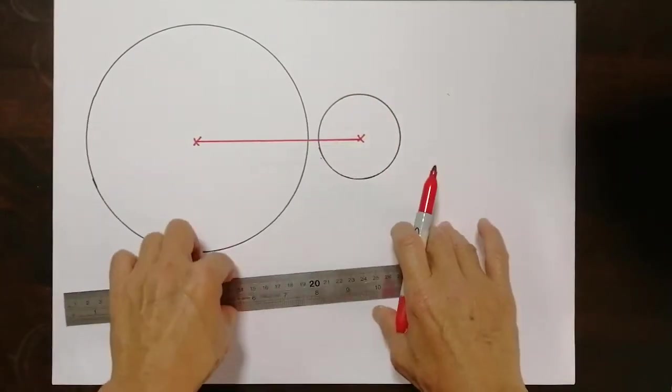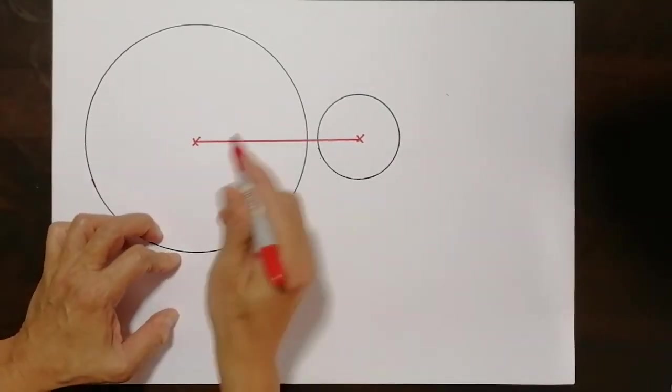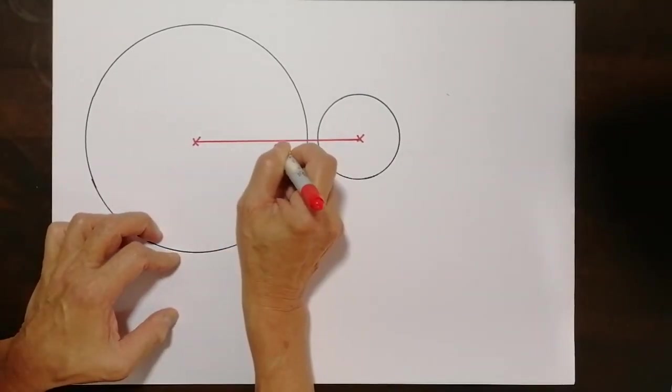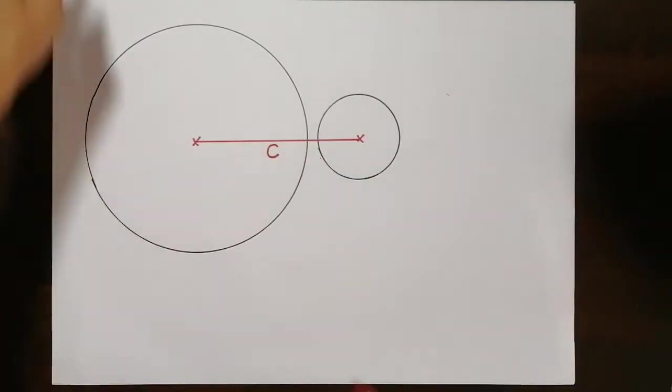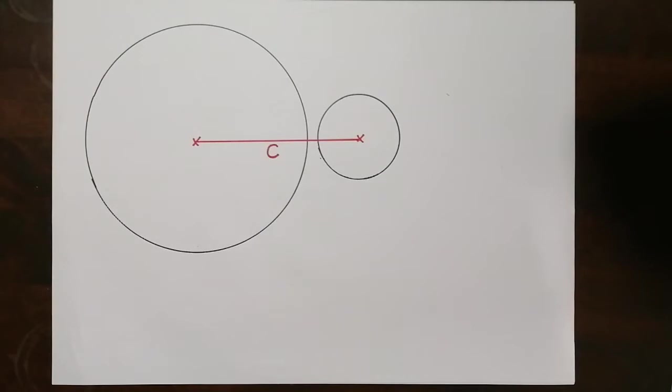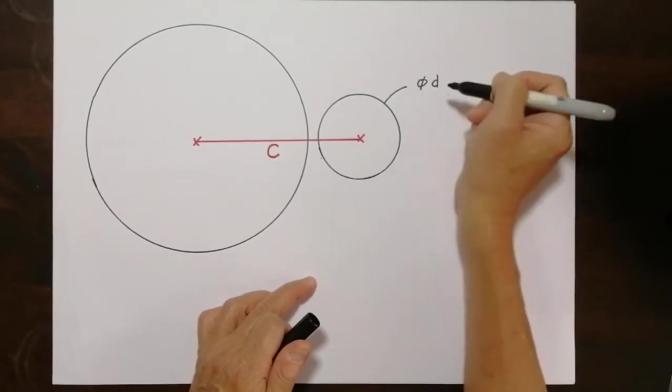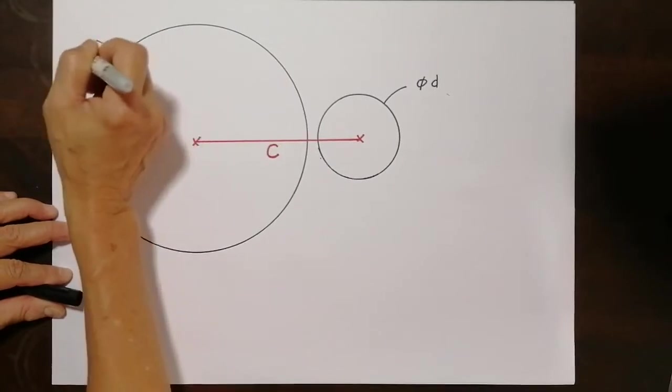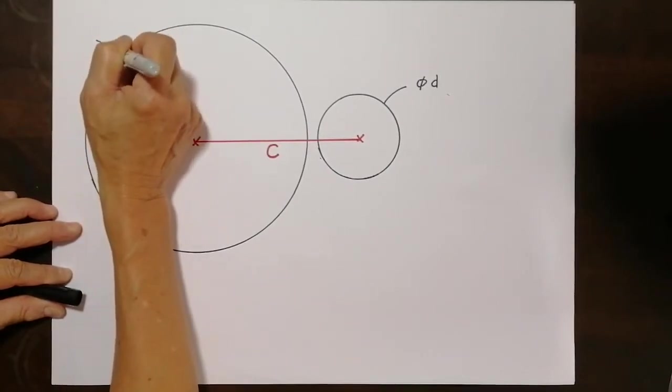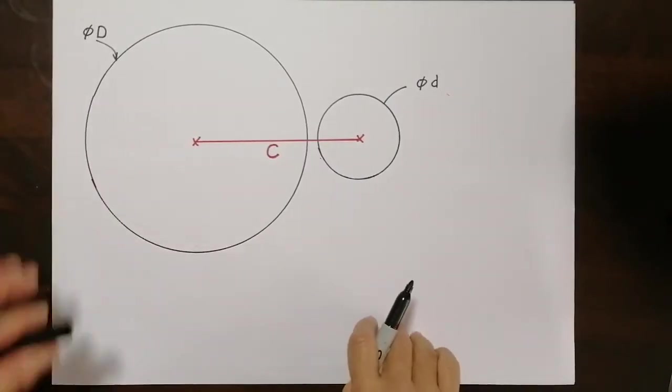Now you realize that these are the parameters that are easily available. The easily available because during the design phase, we have the center distance of the pulley. Then allow me to also put in the diameter of the small pulley. I'll call it diameter small letter d for small pulley. And this diameter obviously I would like to call diameter capital D for the large pulley.